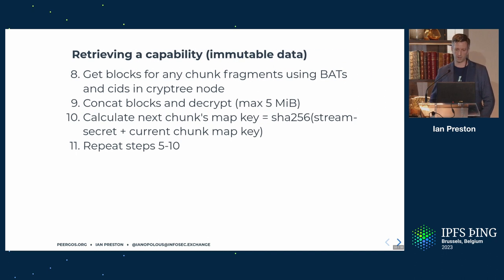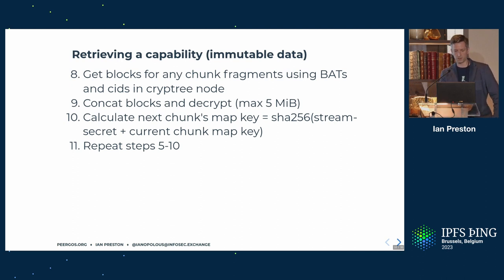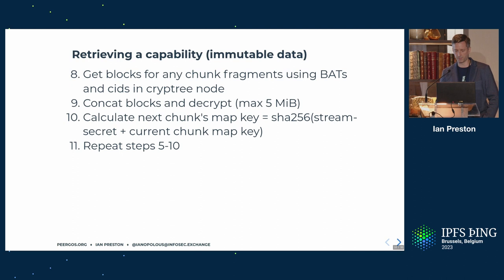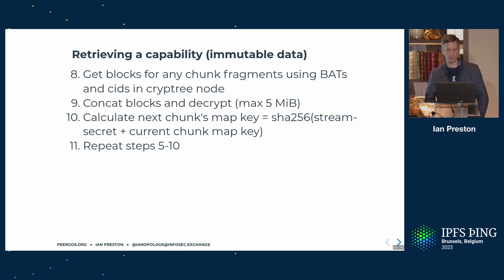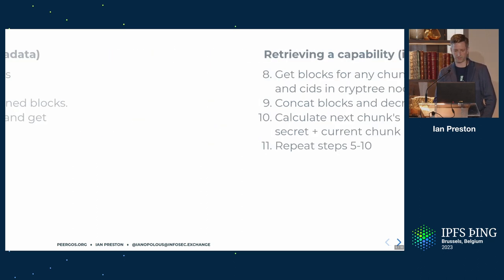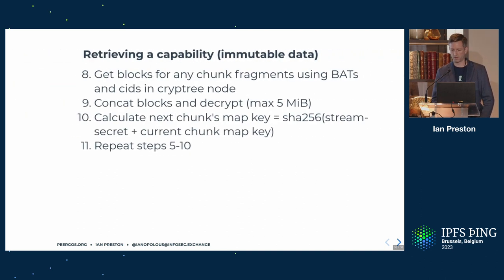If the file is more than 4K, there will be links to the blocks. Files are split into 5-megabyte chunks; each chunk has its own capability and Cryptree node. To get the blocks for a chunk, there are at most five blocks of up to 1 megabyte each. You retrieve those using the CIDs and BATs in the metadata you just retrieved, then concatenate and decrypt them — that gives you the first up to 5 megabytes of the file. To calculate the subsequent capabilities, you do some hashing: you hash the map key with a secret in the decrypted metadata to get the next map key, and the same applies to the BATs. Then you just repeat the CHAMP get and block retrieval steps.